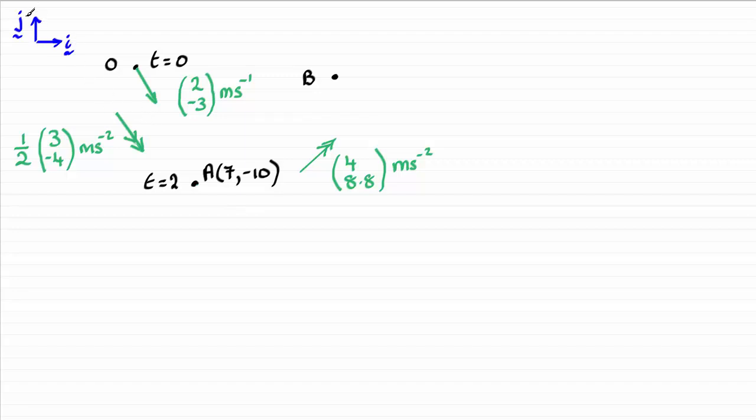So we've got our unit vectors i and j acting east and north respectively. And we know that the particle p starts at this point O when t equals zero, started off with a velocity of 2 minus 3 meters per second. And we're told that it moves to A with constant acceleration, which we found out in the previous part was this vector here,